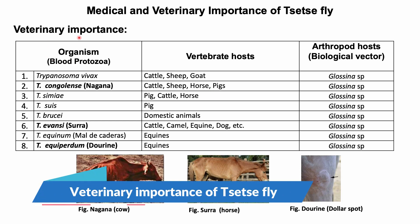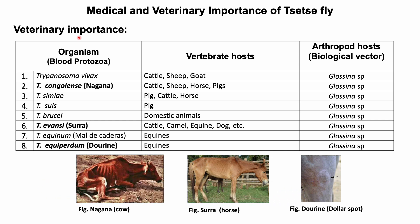Veterinary importance of tsetse flies: tsetse flies transmit a number of Trypanosoma species that cause different diseases in different animals. Here you can see the causal agents and host affected — for all of them the vector is different species of Glossina. We will discuss in detail about these diseases in some other video lecture.